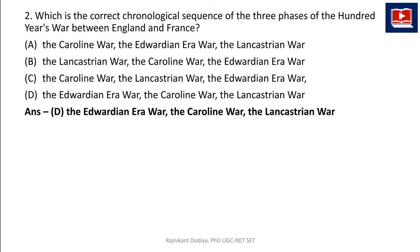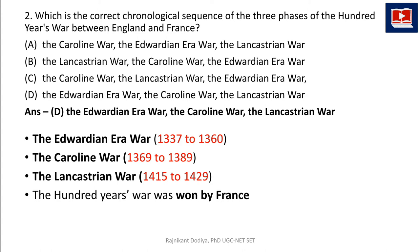The first phase of the Hundred Years War is the Edwardian Era War, in the era of King Edward, lasting from 1337 to 1360. During this phase, Edward III's army defeated the French at the Battle of Crécy in 1346 and again at the Battle of Poitiers in 1356.